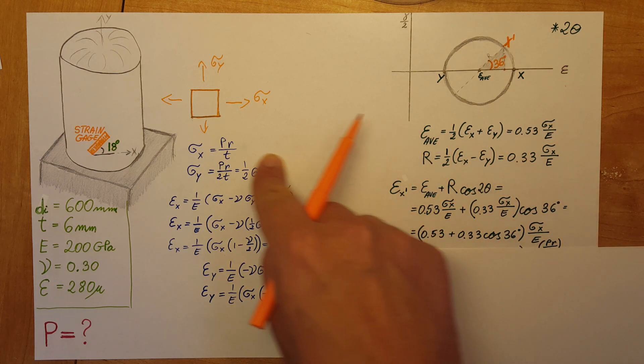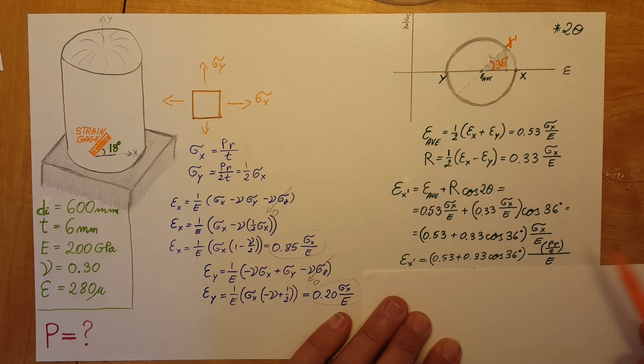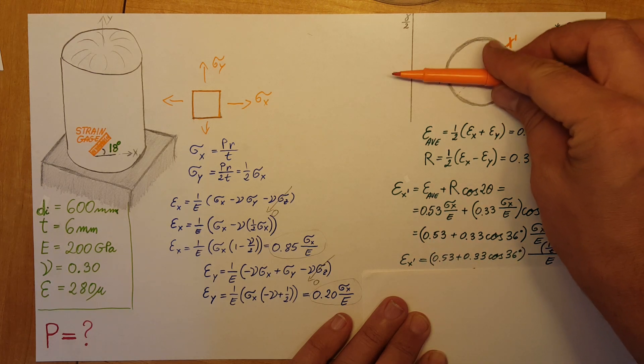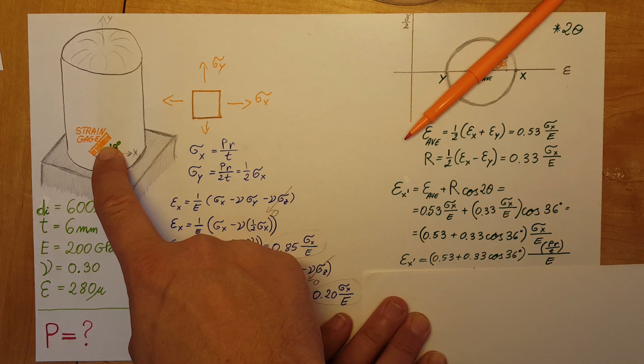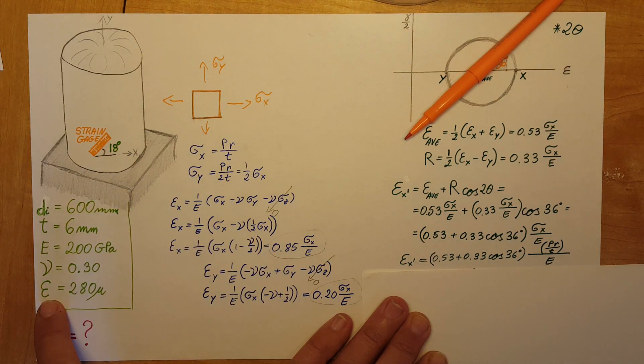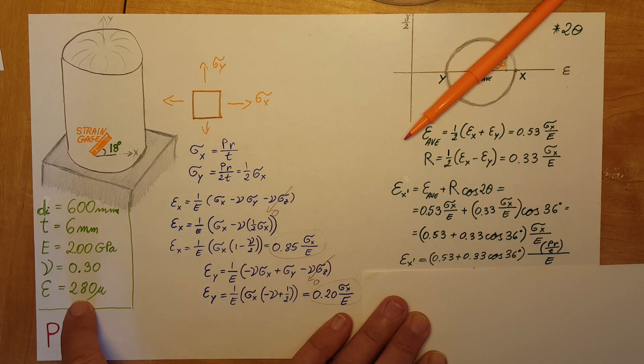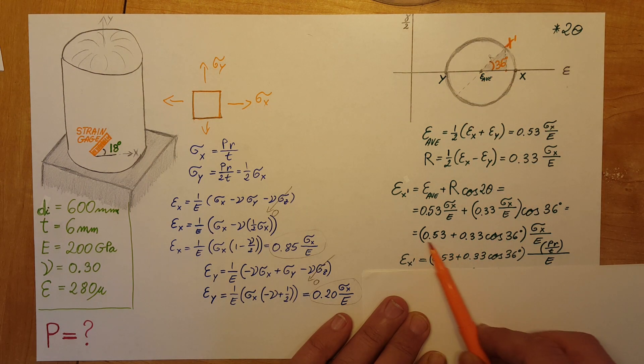Sigma x, in the beginning, we determined is PR over T, so I'll plug it in here. Now we have a nice equation. The whole point of taking the principal orientation and turning it to the orientation we had here is because our strain gauge is already telling us that the strain at this orientation is 280 microns. So this epsilon x is exactly this one.